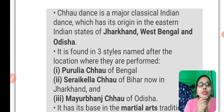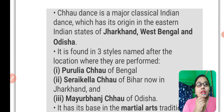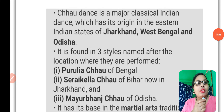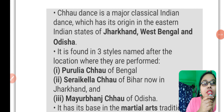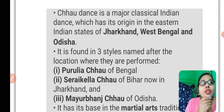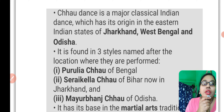The Chhau dance is a major classical Indian dance with its origin in the eastern Indian state of Jharkhand, West Bengal, and Odisha. It is found in three styles, named after the locations where they are performed.